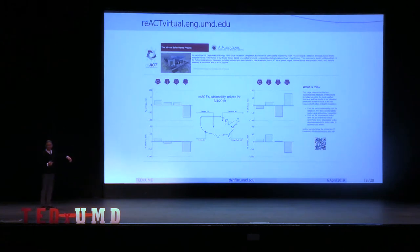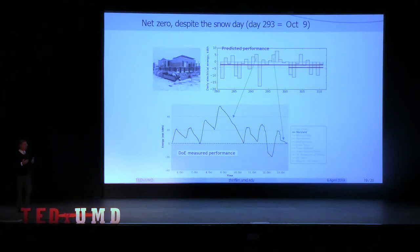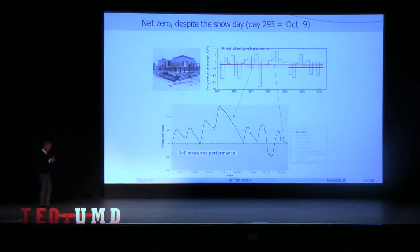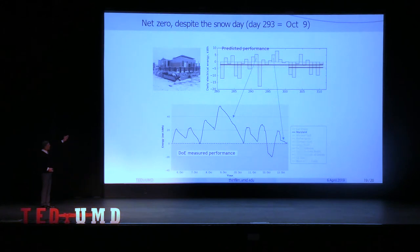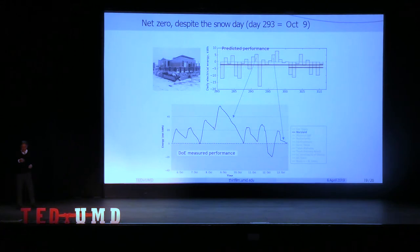Currently we have four virtual houses operating, with predictions for today in four different virtual locations, including right here in College Park. Using our predictive capabilities, we were able to essentially game the competition — we looked at weather reports over the competition period, predicted the performance of the house, and managed our renewable resources in an optimal way. The bottom line is that we survived a snowstorm for the first time in Solar Decathlon history, resulting in a huge energy loss over the snow days. But we predicted that ahead of time and recovered so that the Department of Energy's measured performance showed we started with zero energy and ended with exactly zero energy — net zero truly accomplished.